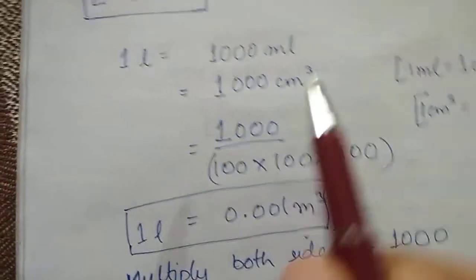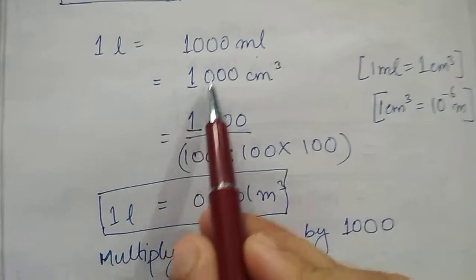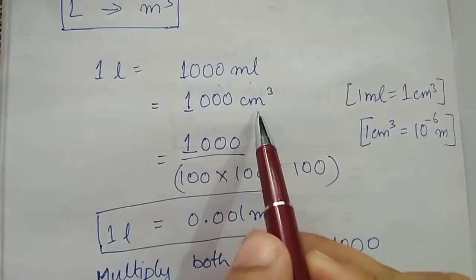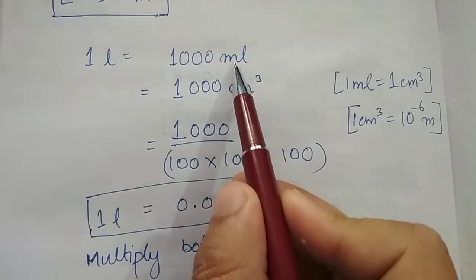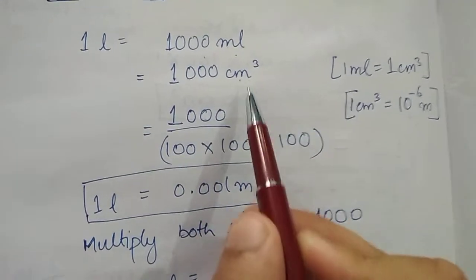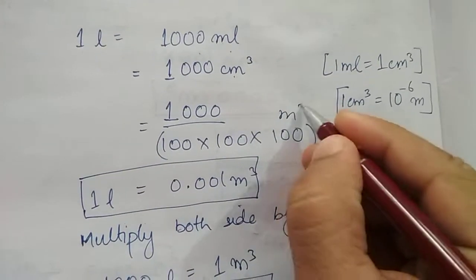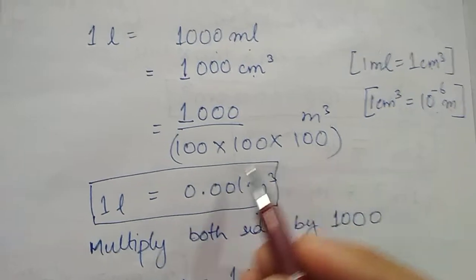In 1 liter there is 1000 mL, there is no doubt, because in 1 mL there is 1 centimeter cube. So instead of mL we can write centimeter cube. Now we have to convert centimeter into meter cube. Then what we have to do is divide it by 10 to the power 6.